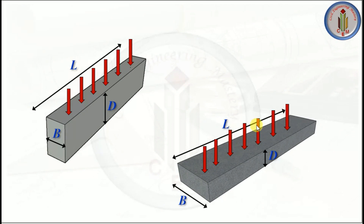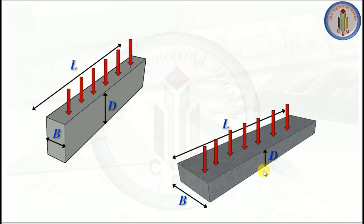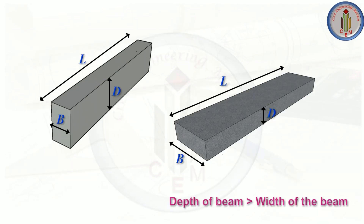Similarly, if you provide very little depth and more width, the stiffness and rigidity of the beam will be reduced. Since the load is applied in the vertical direction, providing less depth significantly reduces the beam's stiffness and rigidity.